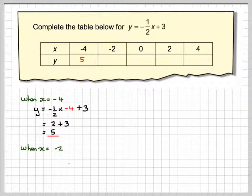When x is equal to minus 2, y will be equal to minus one-half times minus 2 plus 3. A half of 2 is 1, and they're both negative, so it becomes plus. So it becomes 1 plus 3, which is 4. We're filling them in on the table here.